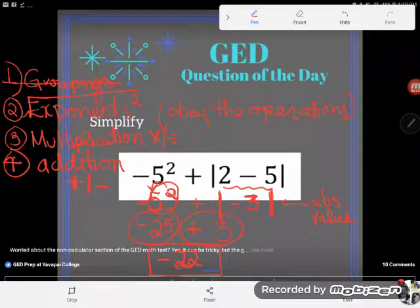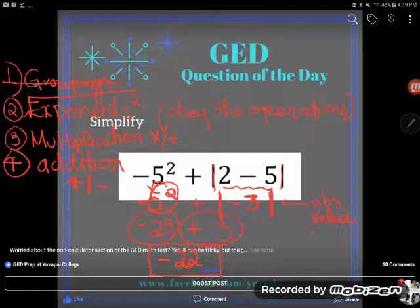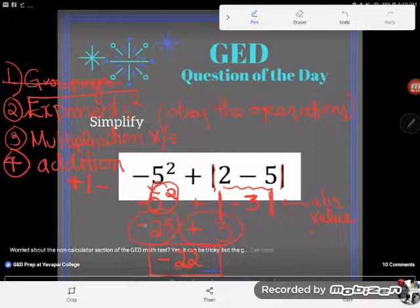This is about as tricky as order of operations problems get. There's a lot going on here. You've got to have a lot of prerequisite skills, so again, you might have to go back and review exponents or what happens when you put an exponent on a negative number. You might need to go back and review the concept of absolute value or the concept of adding and subtracting negatives in order for this to make sense to you. But if you have any questions about this problem, be sure that you ask them in the comments.